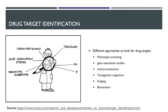Biomarkers are also a big thing: instead of measuring the actual disease directly, if there's a substance highly correlated to the disease or pathogen, you measure that as a marker. These are all different techniques to identify drug targets — figuring out where to go after.